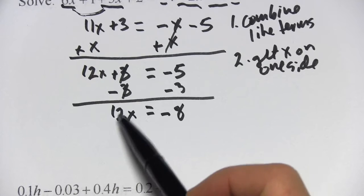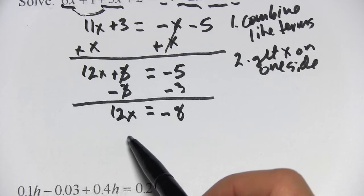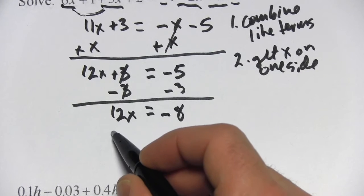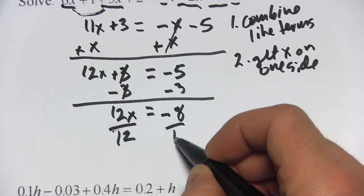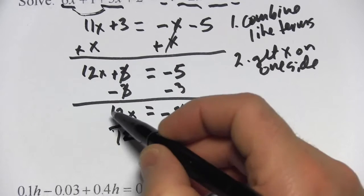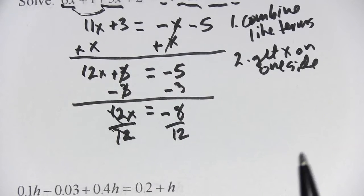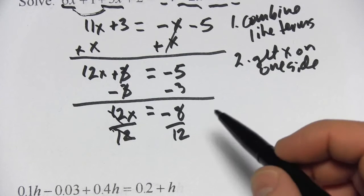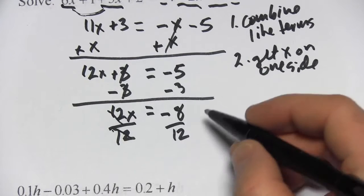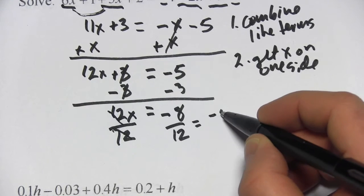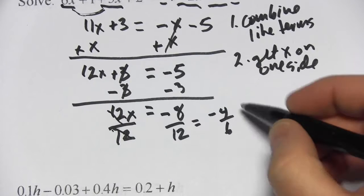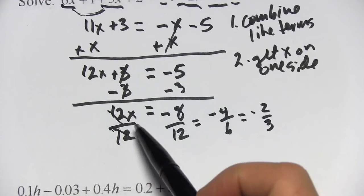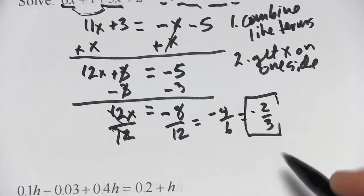Now the last thing here that's being done to x is that it's being multiplied by 12. I want to undo that multiplication, so I'm going to divide by 12. Here we can think of the 12s canceling, that just leaves x. Over here, we have negative 8 twelfths, and I think I can simplify that. They're both divisible by 2, so that would be negative 4 sixths, then negative 2 thirds. So x equals negative 2 thirds.